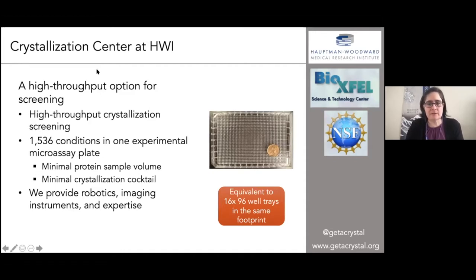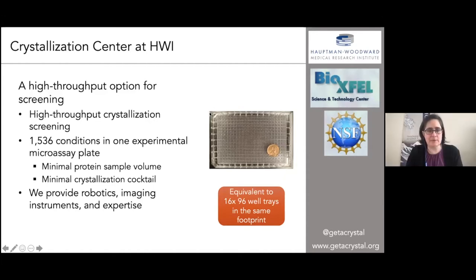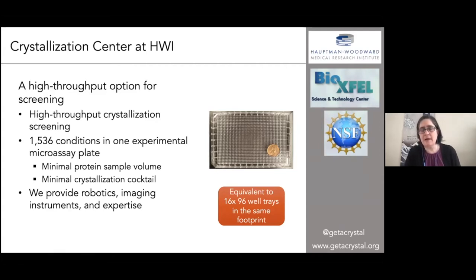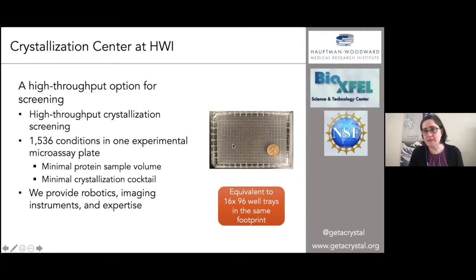What we really do at the crystallization center is offer a high-throughput screening option. We've got a single 1536-well plate, and it's the same physical footprint as one of those 96-well trays. That allows you to do a lot more in terms of screening different crystallization cocktails, as well as minimizing sample consumption. These are extremely small wells, so we use a lot of robotics to set them up.